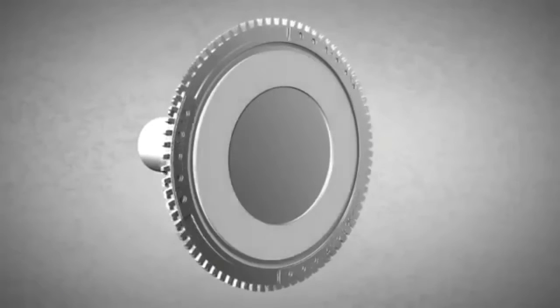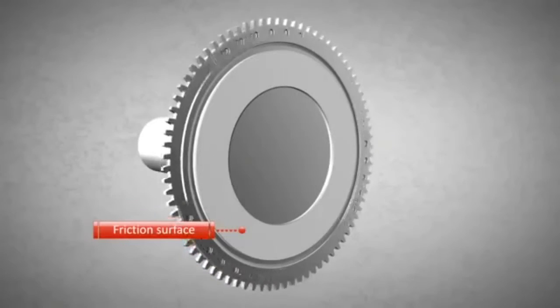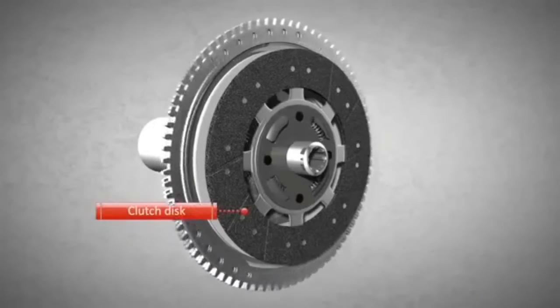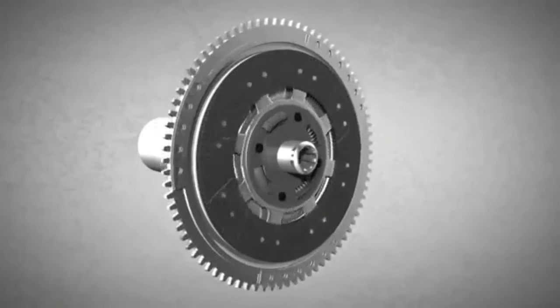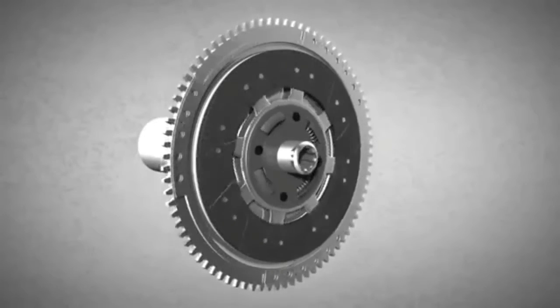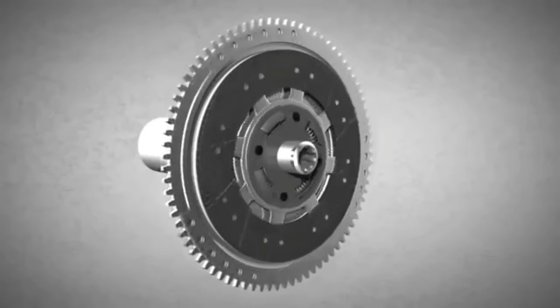The flywheel is equipped with a friction surface. The clutch disc has friction surfaces too. When the friction surface of the flywheel and the friction surface of the clutch disc are brought into contact with each other, the clutch disc rotates.